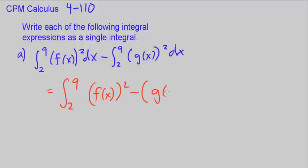So minus g of x squared, put a parenthesis around all that, dx. Since the boundaries are the same, we can combine them, and it's a single integral.